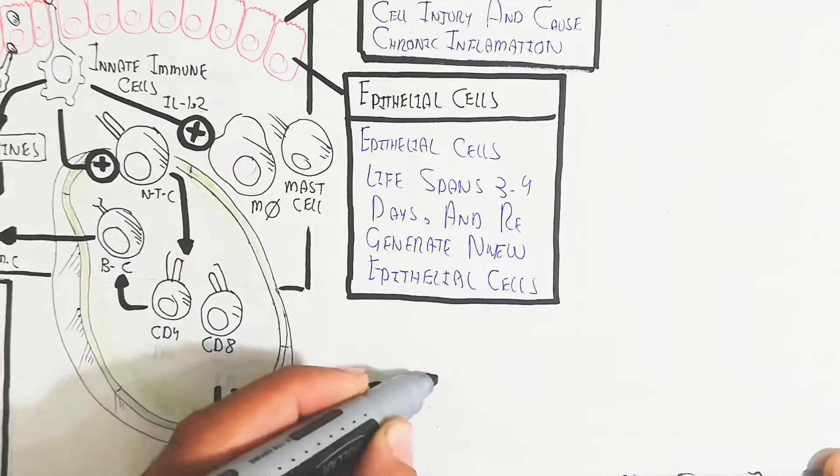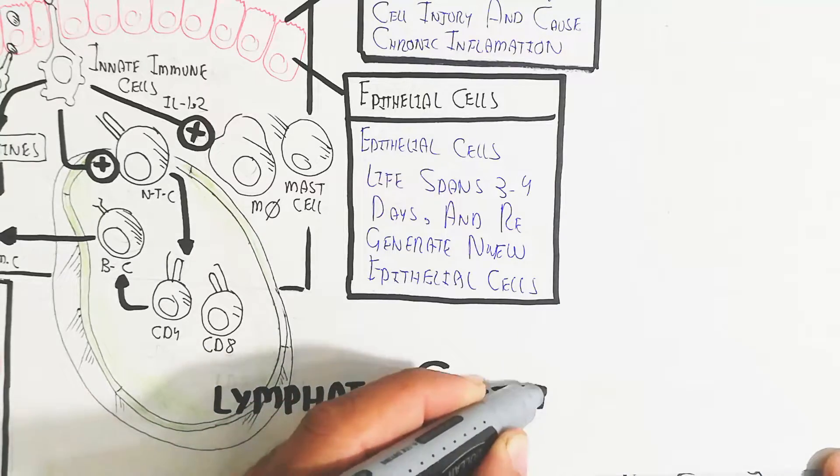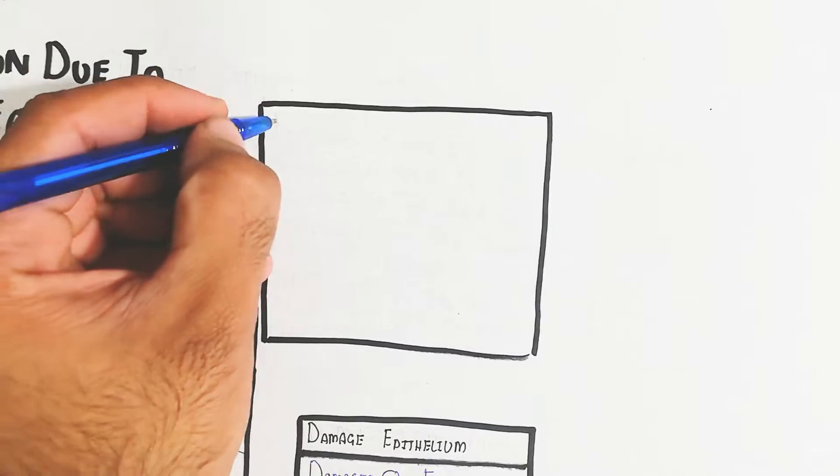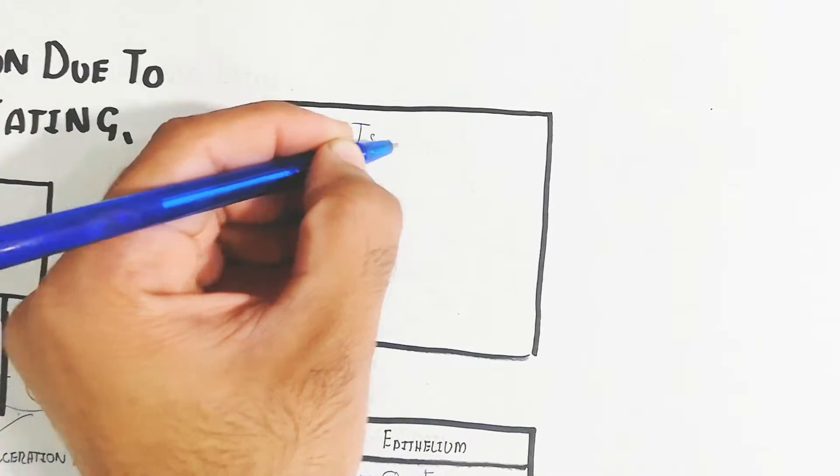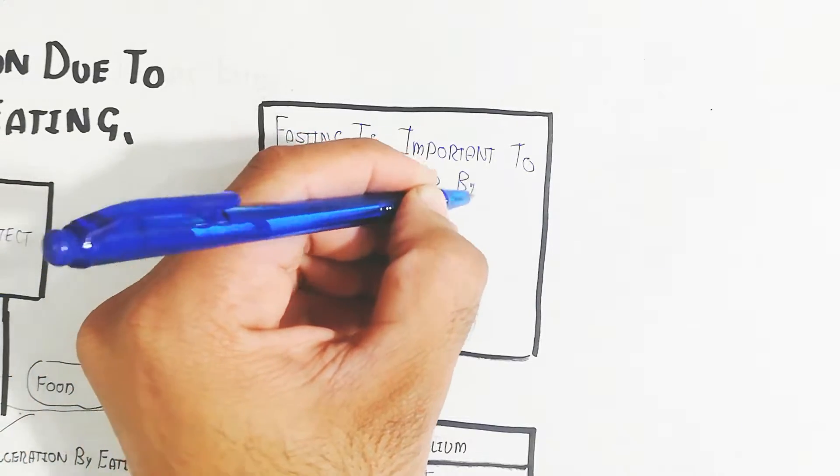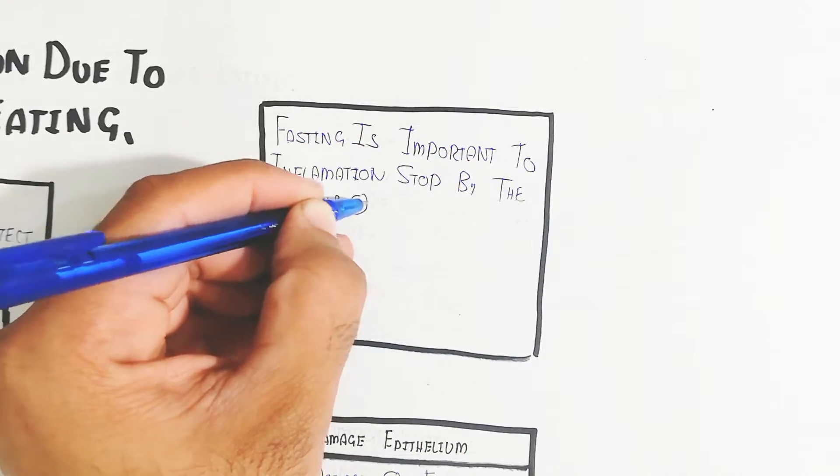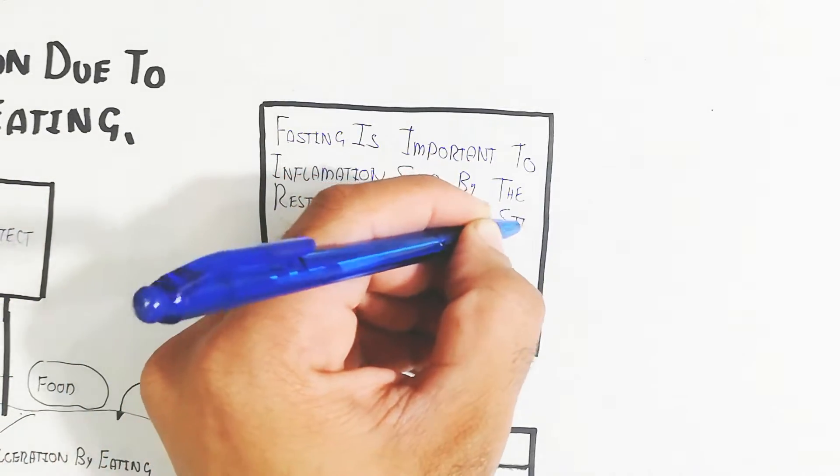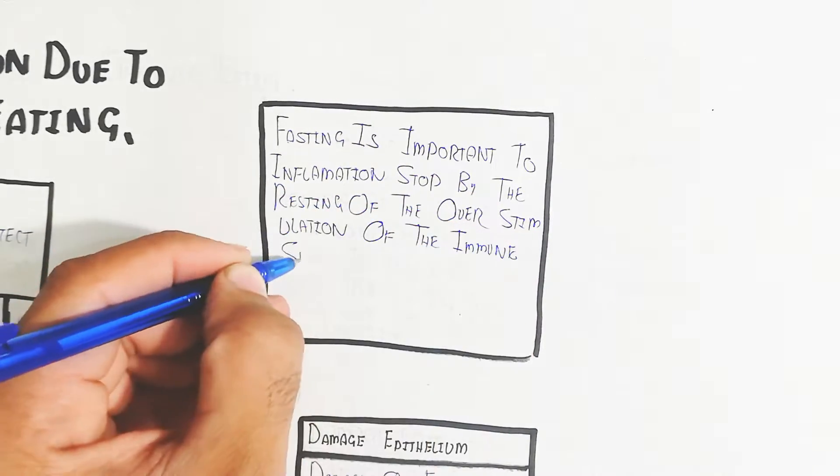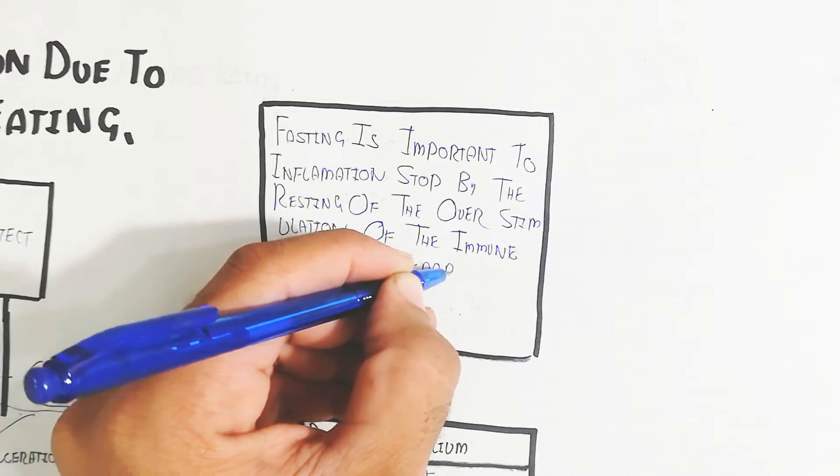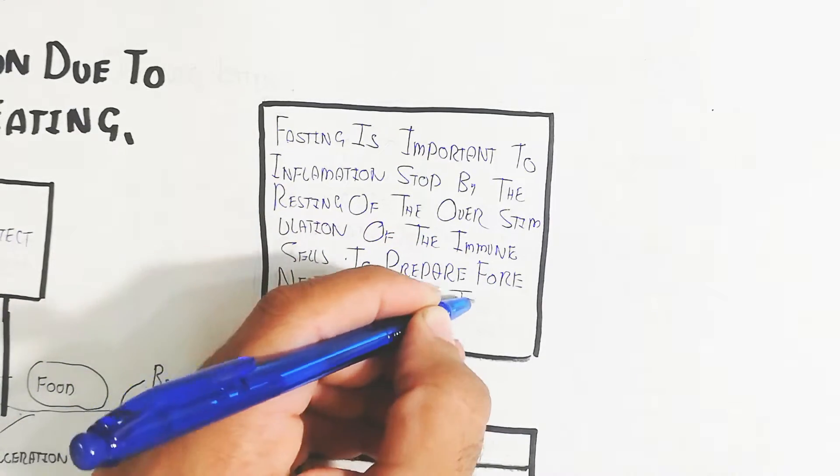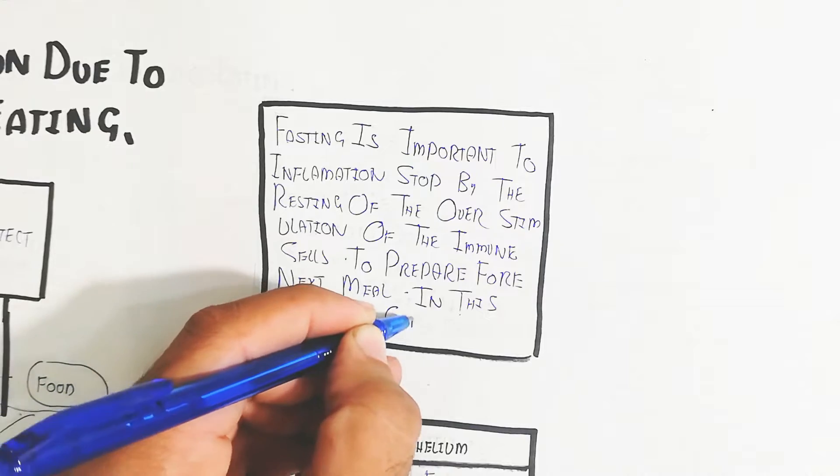The lymphatic system is here. Remember this is continuous inflammation due to chronic eating. Eating leads to continuous inflammation which causes autoimmune disorders like lupus erythematosus and other immune disorders. Autoimmune reactions will occur.